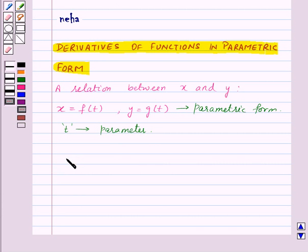Now suppose we want to find dy by dx, then this will be equal to dy by dt, that is differentiation of y with respect to t, upon dx by dt, that is differentiation of x with respect to t.